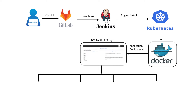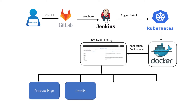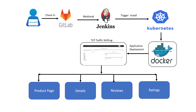The BookInfo application is broken into four separate microservices. The Product Page microservice calls the details and reviews microservices to populate the page. The Details microservice contains book information. The Reviews microservice contains book reviews and also calls the Ratings microservice. The Ratings microservice contains book ranking information that accompanies a book review.